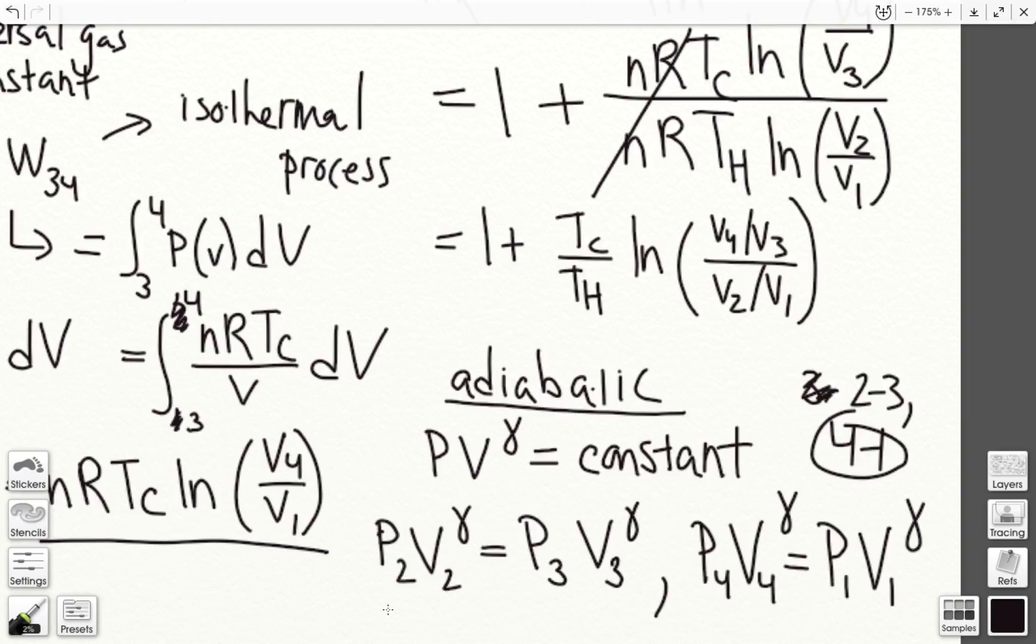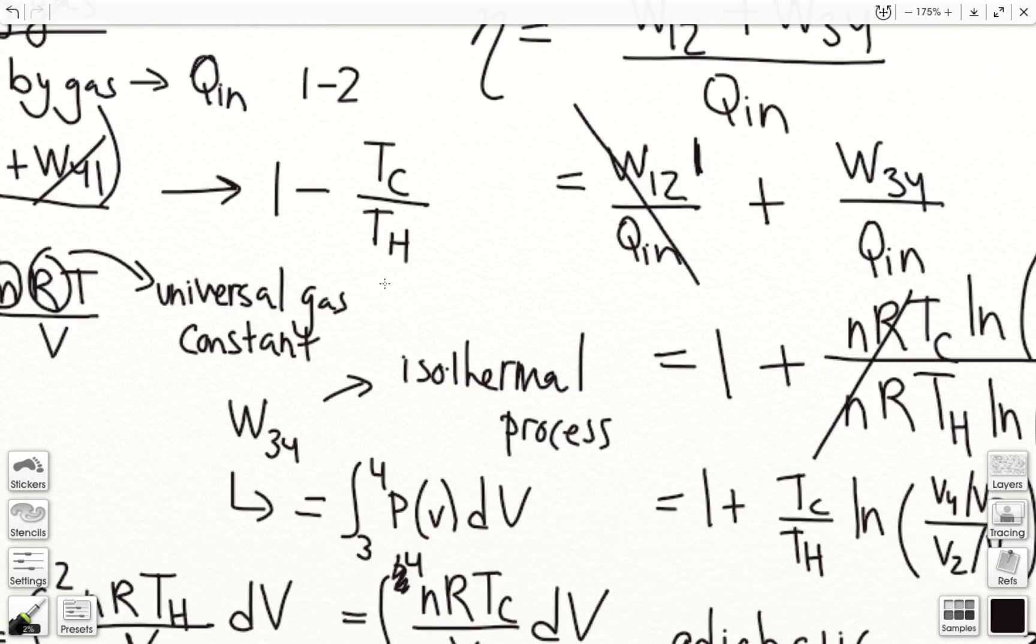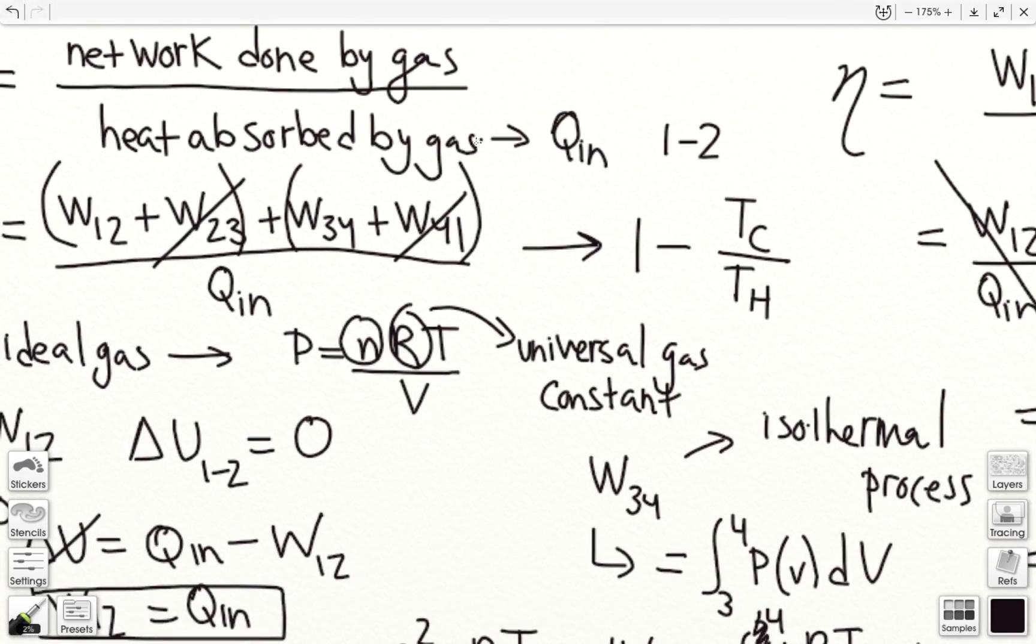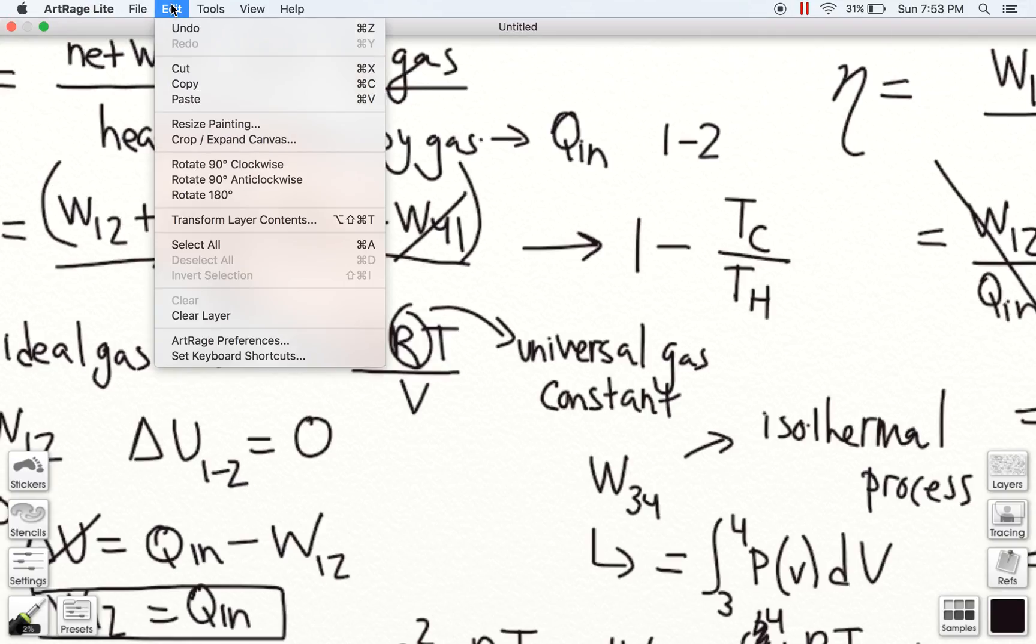So I know that the pressure at 2 and the volume at 2 to the gamma is going to be equal to the pressure at state 3 and volume at state 3 to the gamma. So now, I'm going to plug in the ideal gas law into my pressures. So I'm going to start a new layer here real quick.